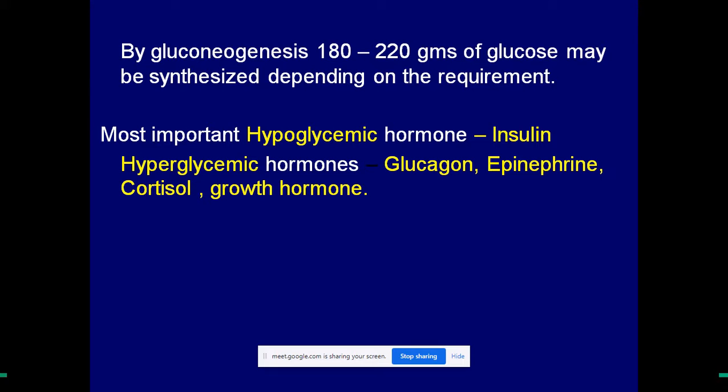Hyperglycemic hormones like glucagon, epinephrine, cortisol, and growth hormone are produced in response to hypoglycemia. Because of the activity of insulin, glucose is exhausted from the body via glycolysis and the citric acid cycle, so blood glucose concentration decreases below the normal level — that condition is called hypoglycemia. In response to hypoglycemia, hyperglycemic hormones increase the blood glucose concentration back to the normal level, which is why they are called hyperglycemic hormones.